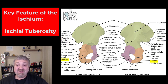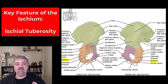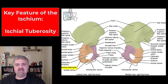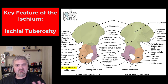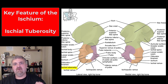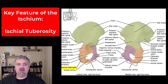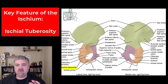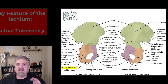Then we have the ischium — I call it the butt bone — it's the part you're sitting on right now. The key structure is the ischial tuberosity, a very important origin for your hamstring muscles. It's so rough because of all the pulling from the hamstring muscles. That's the ischial tuberosity on the ischium, the orange one.